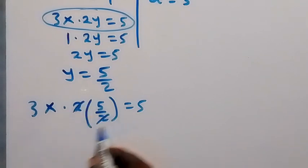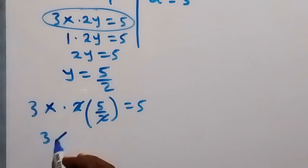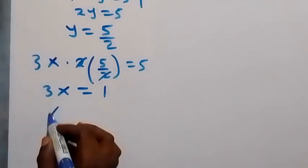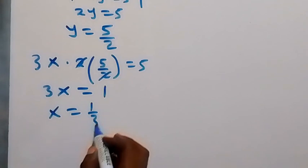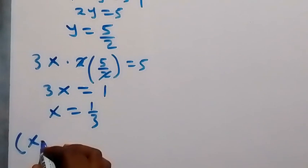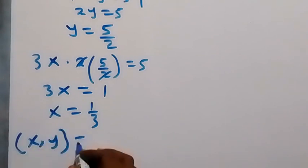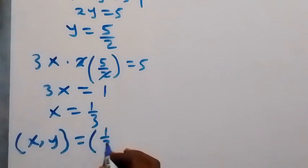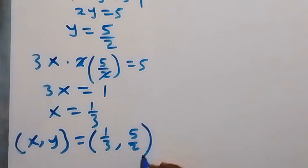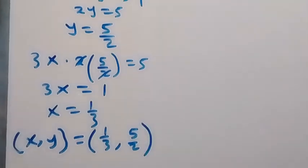The 2s cancel, and dividing both sides by 5, we get 3x equals 1, so x equals 1 over 3. This means for the first case, the solution is x equals 1/3 and y equals 5/2.